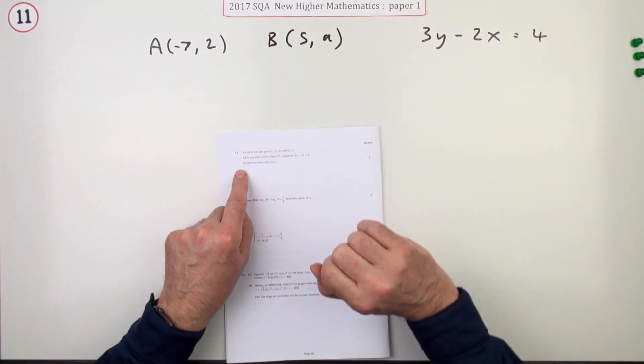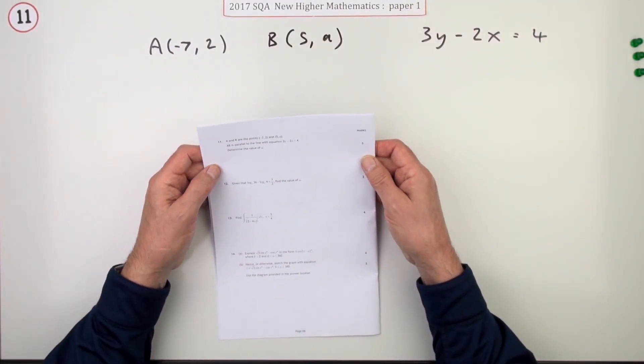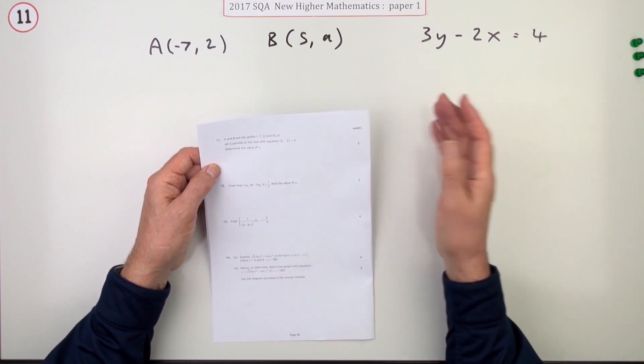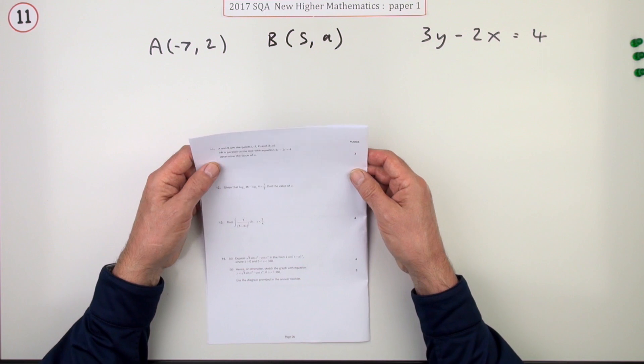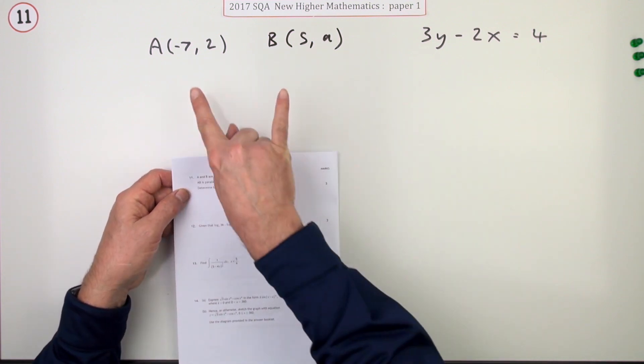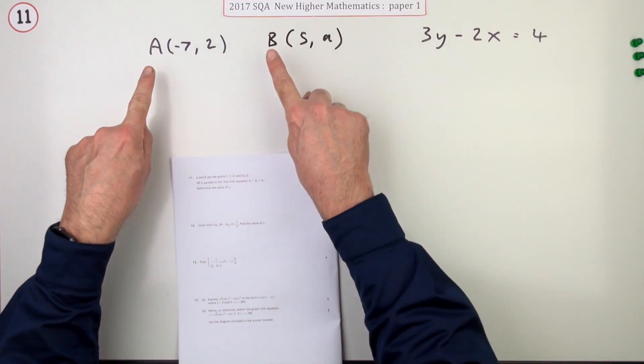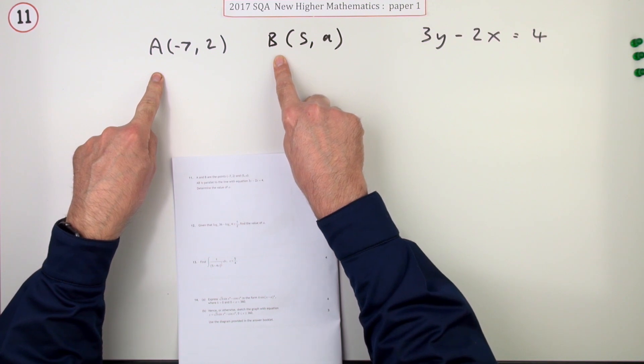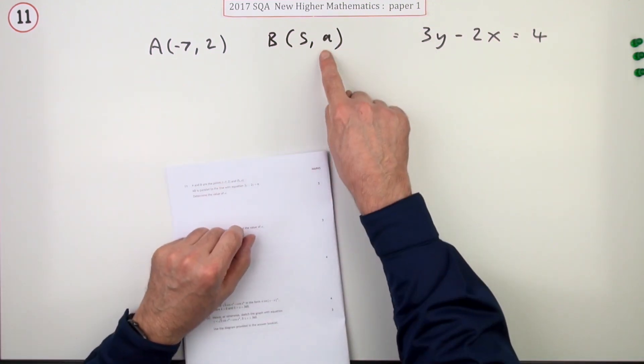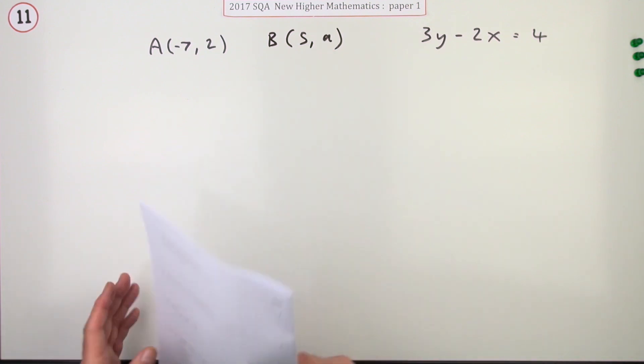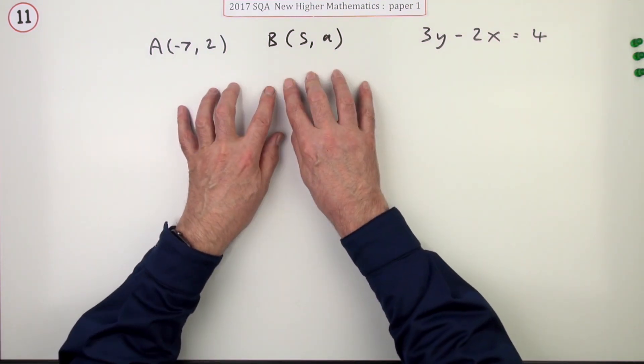Number 11 from paper 1 of the 2017 Higher Maths - just three marks. A standard gradients-type question. Given these two points, A and B, the line segment AB is parallel to this line. What's the value of this unknown a?